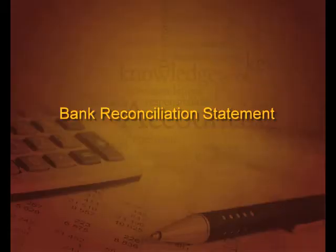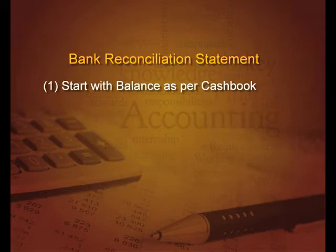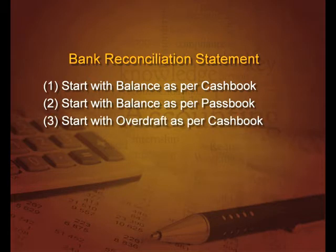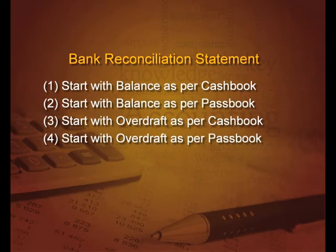To start with, there are four ways to start making a bank reconciliation statement. First, we can start with balance as per cash book. Second, we can start with balance as per pass book. Third, we can start with overdraft as per cash book. And the last is, we can start with overdraft as per pass book.